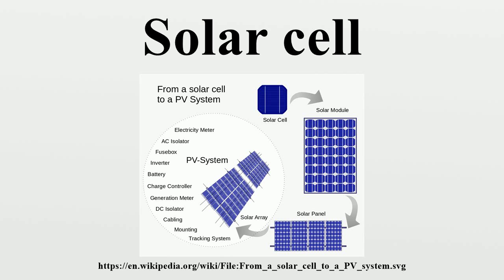Problems such as shadow effects can shut down the weaker parallel string causing substantial power loss and possible damage because of the reverse bias applied to the shadowed cells by their illuminated partners. Strings of series cells are usually handled independently and not connected in parallel, though individual power boxes are often supplied for each module and connected in parallel. Although modules can be interconnected to create an array with the desired peak DC voltage and loading current capacity, using independent MPPTs is preferable. Otherwise, shunt diodes can reduce shadowing power loss in arrays with series/parallel connected cells.